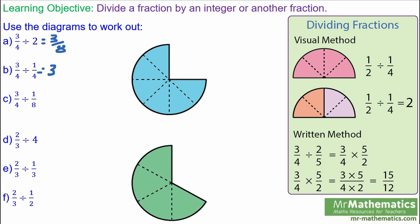Three quarters divided by one eighth. You can see each of these sectors is an eighth. So how many eighths go into three quarters? One, two, three, four, five, and six. So three quarters divided by one eighth is six.